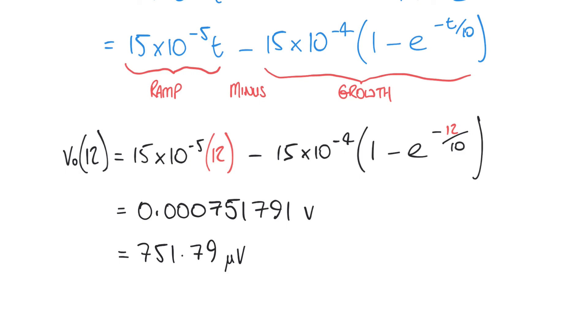This has been the last example of a first-order system response. We're going to look at more examples, but they will be examples of second-order systems.